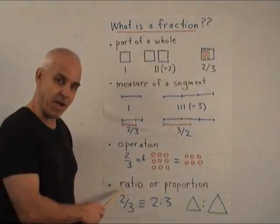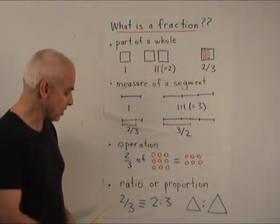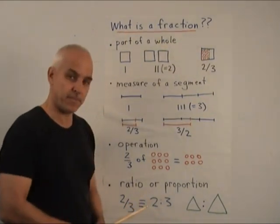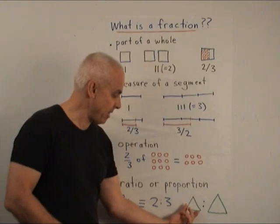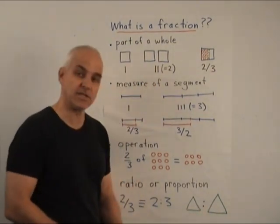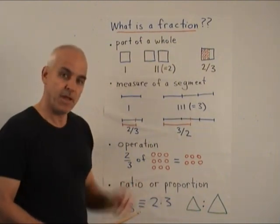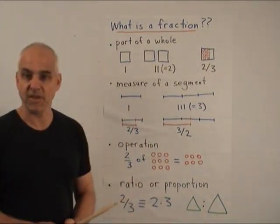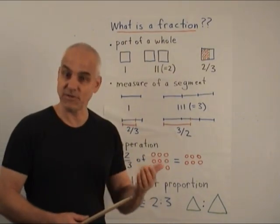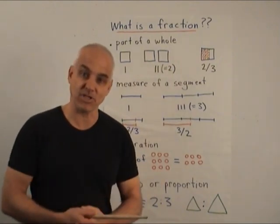Another way of thinking about it is as a ratio or a proportion. For example, 2 thirds can be thought of as the ratio or proportion 2 to 3. And we can imagine that by comparing two objects and the relative sizes of those two objects might be 2 to 3. So there are various possible ways of thinking about fractions and each one of them has some usefulness and validity and can be used as a basis for teaching young people.